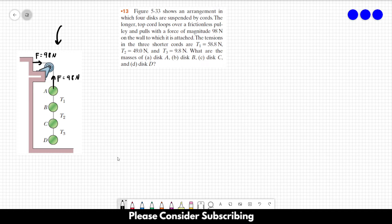So let's draw our free body diagram for each disc. For the first disc, disc A, the free body diagram is force F pulling upwards. Then we have the gravitational force pulling downwards, FGA, and we have T1 pointing downwards. For disc B, we have T1 upwards, we have gravity downwards FGB, and we also have T2.